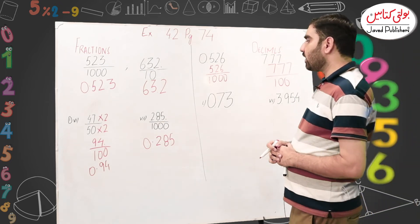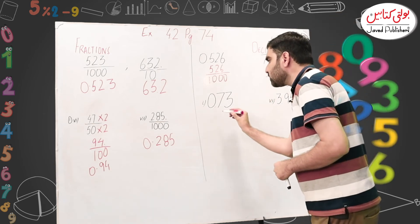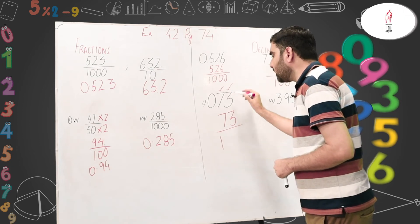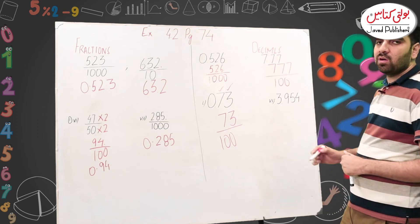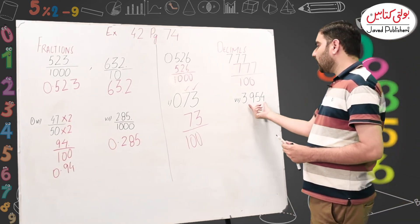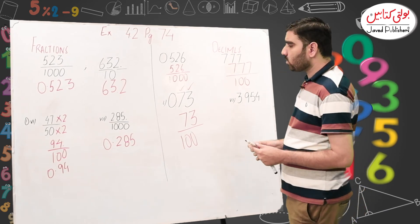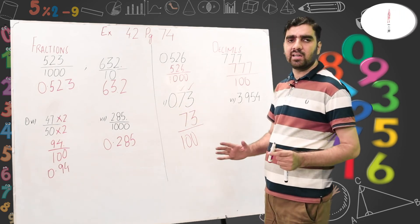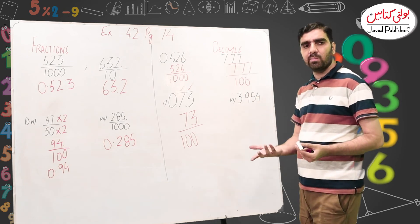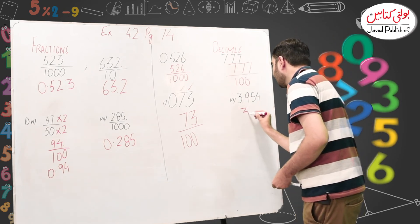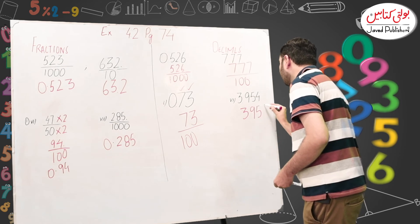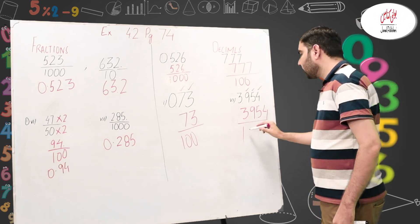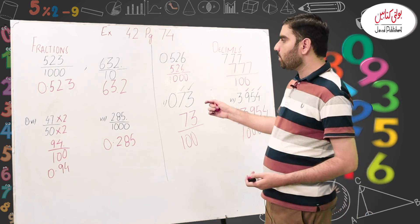Question 2, Part 1 from the book: write the digits after the decimal point as the numerator. For a two-digit decimal like 0.11, there are 2 digits, so the denominator has 2 zeros, giving 11 over 100. For Part 6: 3.954. Here we have a whole number, so we write the complete value 3954. The digits after the decimal point are 9, 5, 4 — that is 3 digits — so the denominator has 3 zeros, giving 3954 over 1000.